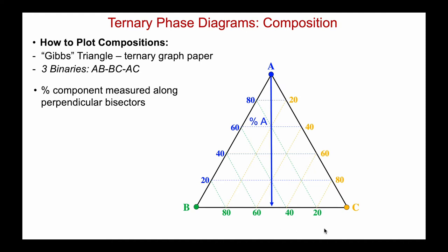The same approach applies for B, except now we're working from the lower left corner — all B on the lower left, no B on the opposite side of the triangle.